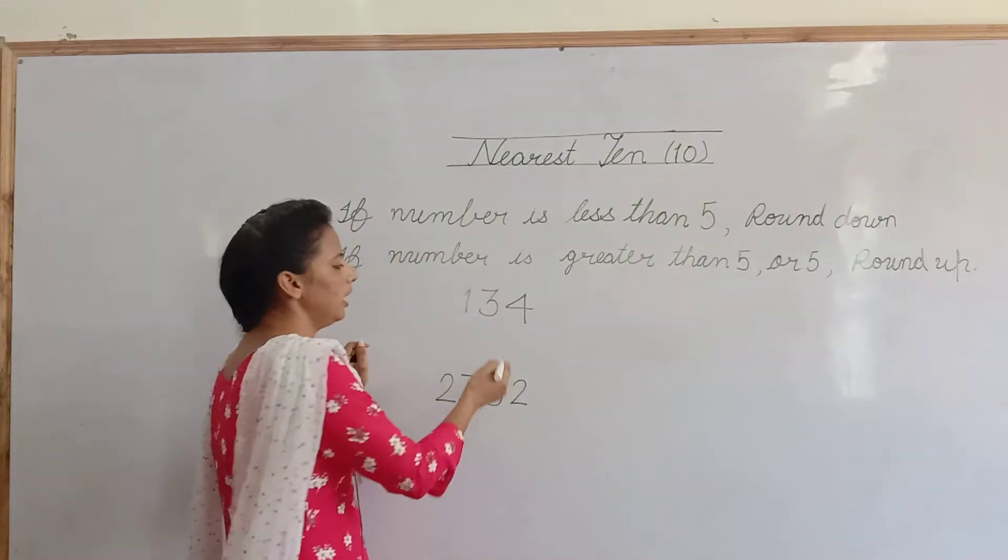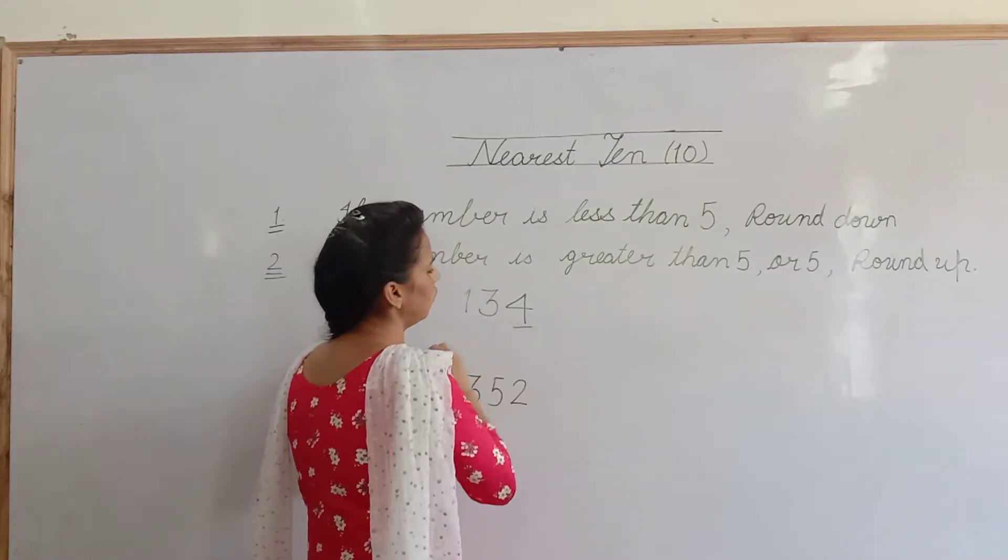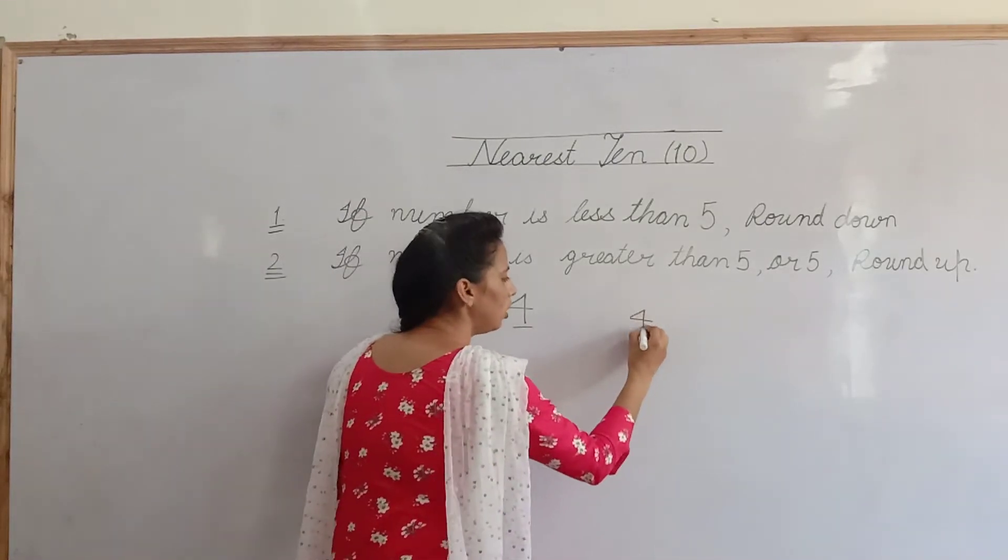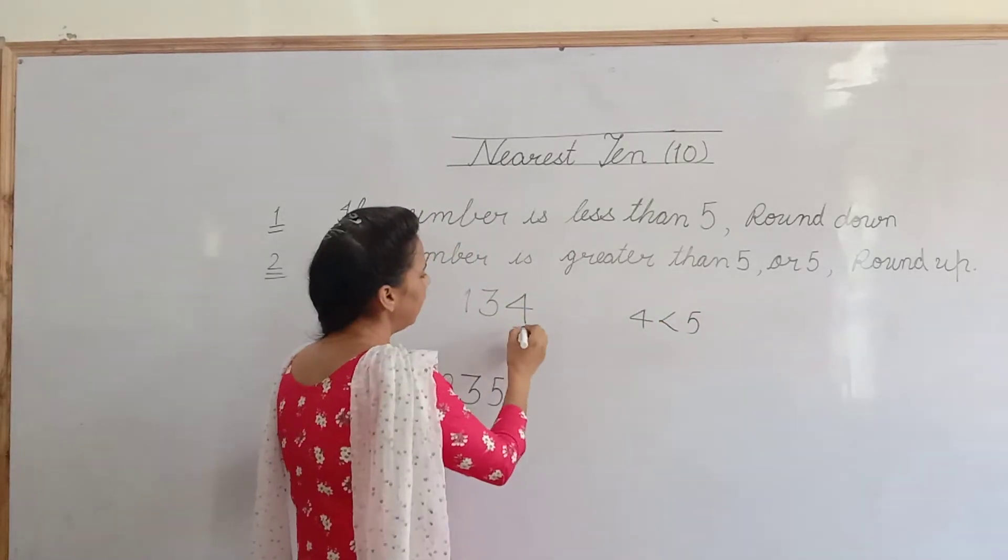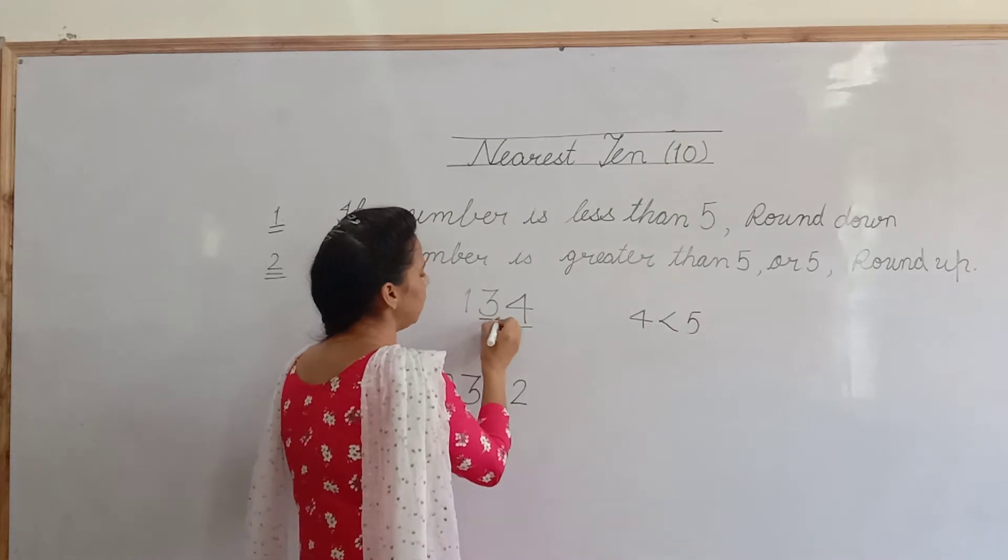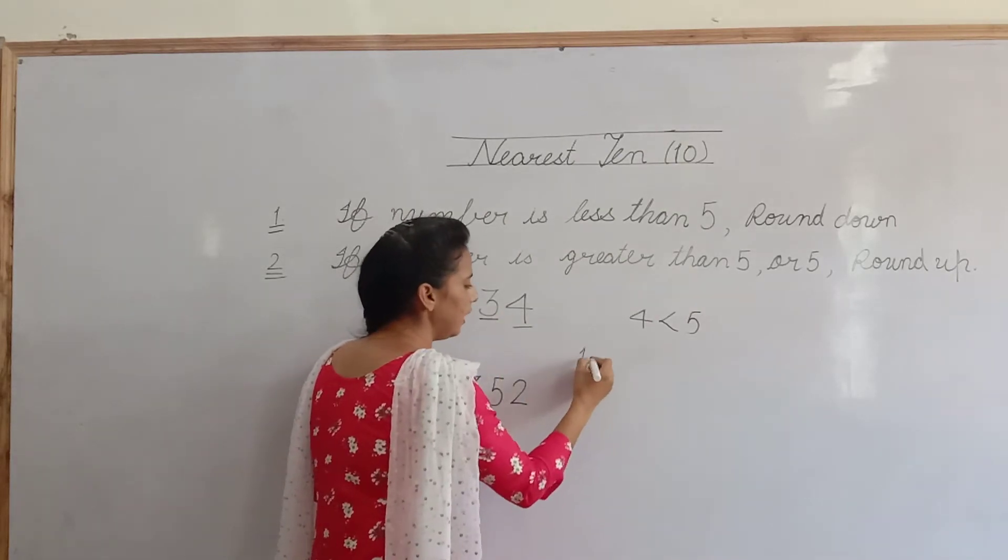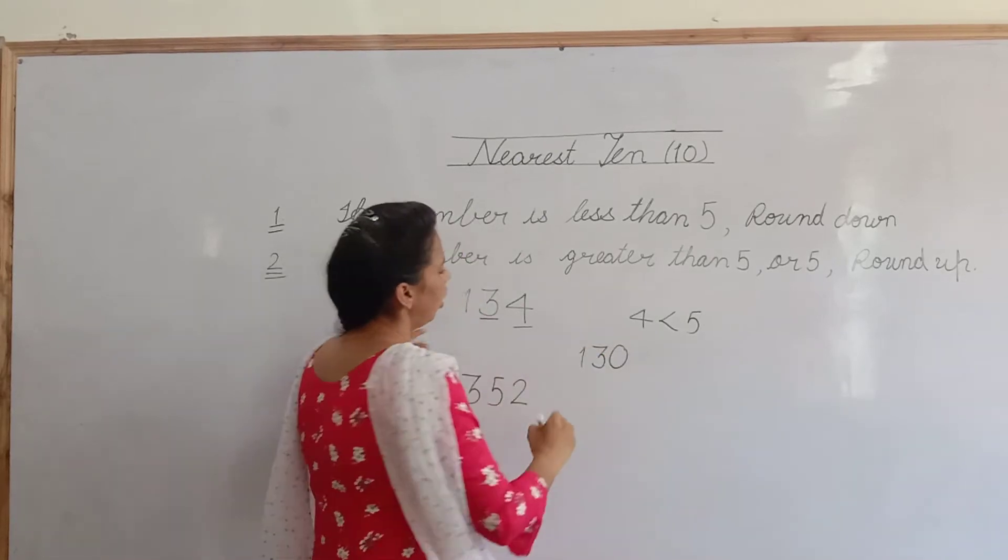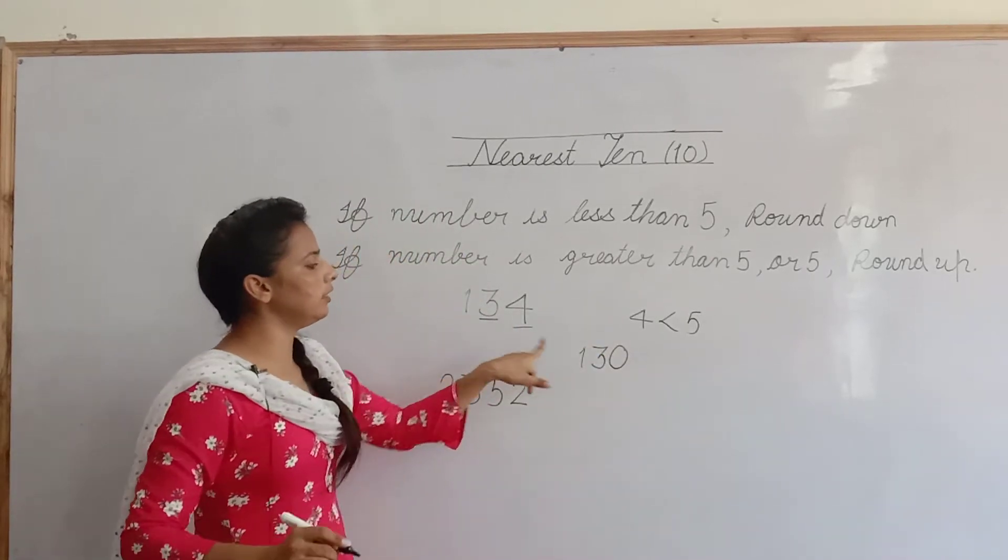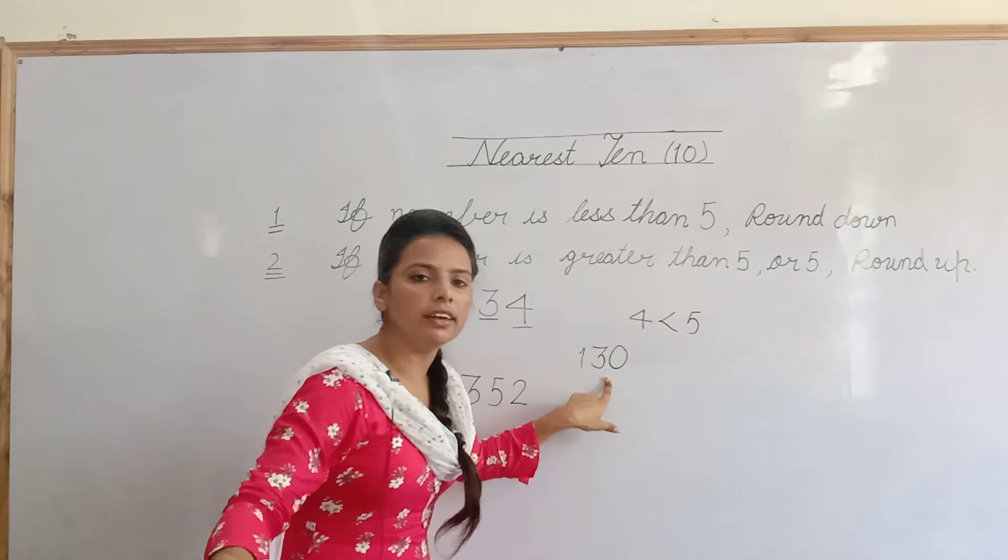اوپر heading دیکھو کہ nearest 10 کا ہی estimate دین ہے. تو ہم کیسے کریں گے? سیم method ہاں follow کرو گے. Look at 1's place. 4 less than 5. means 5 سے چھوٹا ہے. then we will not change 10's place. we will write it as it is. and add 0. اب 134 کا nearest 10 کیا آئے گا? 130.